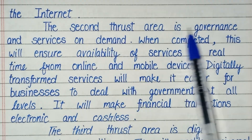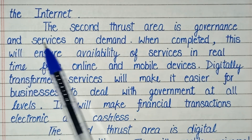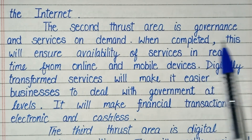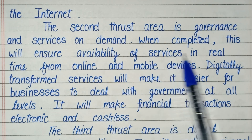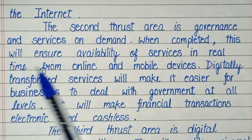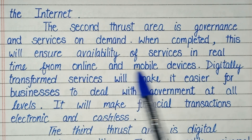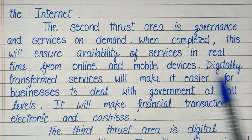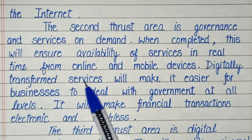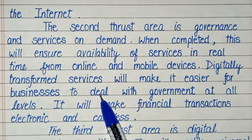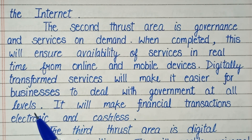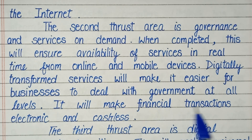The second thrust area is governance and services on demand. When completed, this will ensure availability of services in real time from online and mobile devices. Digitally transformed services will make it easier for businesses to deal with government at all levels. It will make financial transactions electronic.